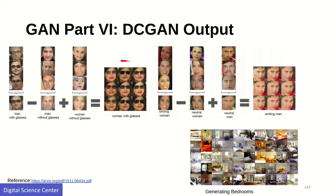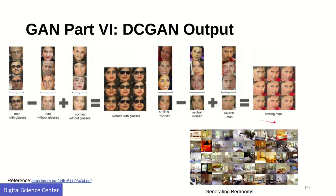One example combines features of men wearing glasses and men without glasses, and tries to generate a woman without glasses. You mix up certain features to create another feature. For instance, to create a smiling man, you have a smiling woman, a neutral woman, and a neutral man — it learns from these, negates certain features, and generates a smiling man.